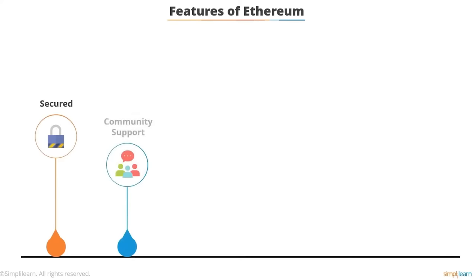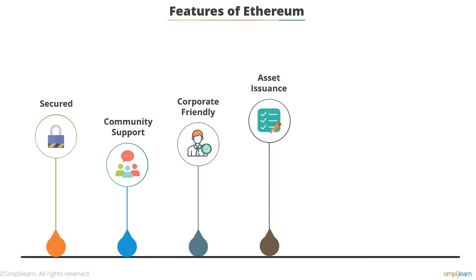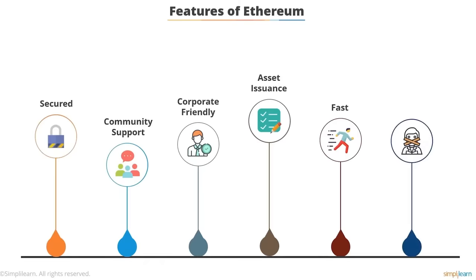The second feature of Ethereum is its community following — Ethereum has attracted attention from people all over the world. The third feature is its corporate-friendly structure — the platform is leveraged by many corporates to test and build various applications. The fourth feature is the possibility of creating new assets on the Ethereum blockchain that can be used as currency, a representation of an asset, a virtual share, a proof of membership, or anything at all. The fifth feature is that Ethereum processes transactions fast — while Bitcoin requires a block time of 10 minutes, in Ethereum it's only a few seconds. The last feature is that Ethereum is uncensored — its open-source network allows complete transparency to view every transaction.